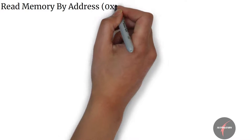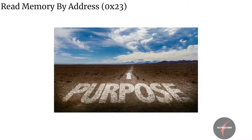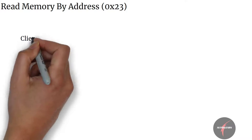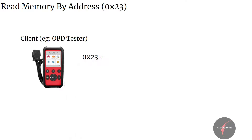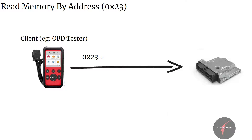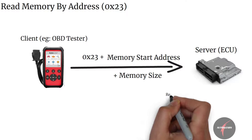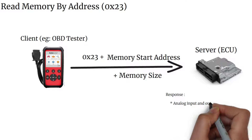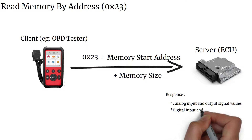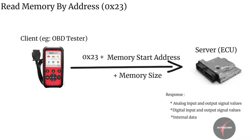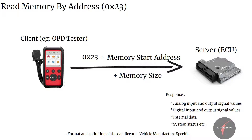That's Read Memory by Address (0x23) service. Before we dive in, let's first understand the purpose of the service. Read Memory by Address service allows the client to request data stored in server memory by providing the start address and size of the memory. The data provided may include analog input and output signal values, digital input and output signal values, internal data, and system status, etc. The format and definition of the data record shall be vehicle manufacturer specific.